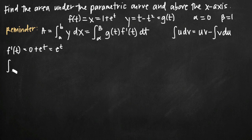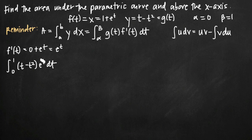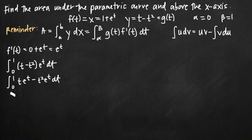We'll have the integral from 0 to 1 of g of t times f prime of t, which is t minus t squared times e to the t dt. We distribute e to the t across t minus t squared to get the integral from 0 to 1 of t e to the t minus t squared e to the t dt. We then separate this into two integrals: the integral from 0 to 1 of t e to the t dt minus the integral from 0 to 1 of t squared e to the t dt.